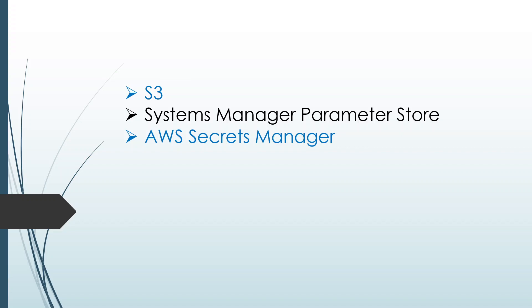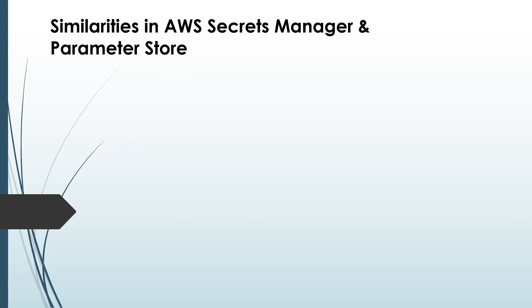Before identifying the differences, let's look at the similarities between AWS Secrets Manager and Parameter Store. Both support storing data — URLs, encryption keys — in the form of key-value pairs.